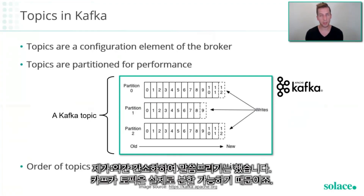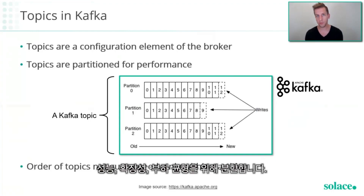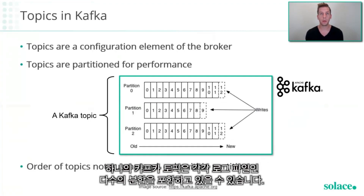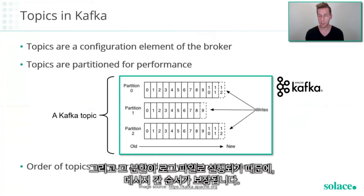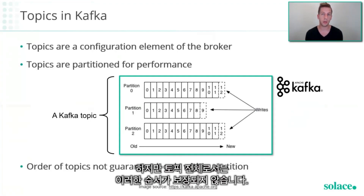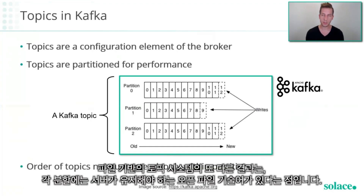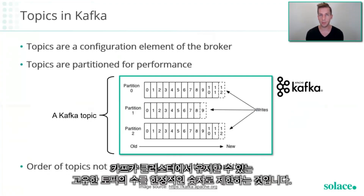Kafka topics can actually be partitioned — for performance, scalability, and load balancing — and each partition is actually a log file. So a single Kafka topic can contain multiple partitions, each being a log file. Because the partition is implemented as a log file, there is a guarantee of order among messages within a partition, but across the topic as a whole, that guarantee doesn't hold. Which means two consumers both reading from the same Kafka topic might receive messages in different orders. The other consequence of a file-based topic system is that each partition has an open file descriptor the server needs to maintain, which puts a finite limit on the number of unique topics you can maintain in a Kafka cluster.